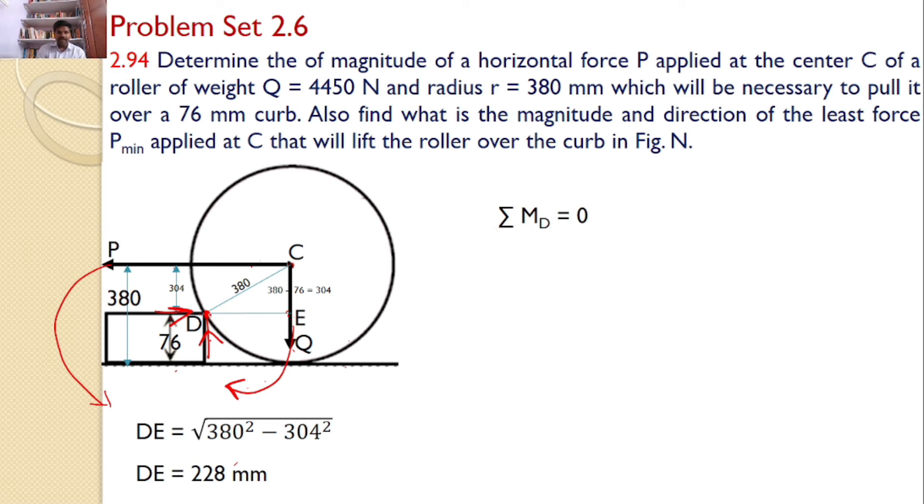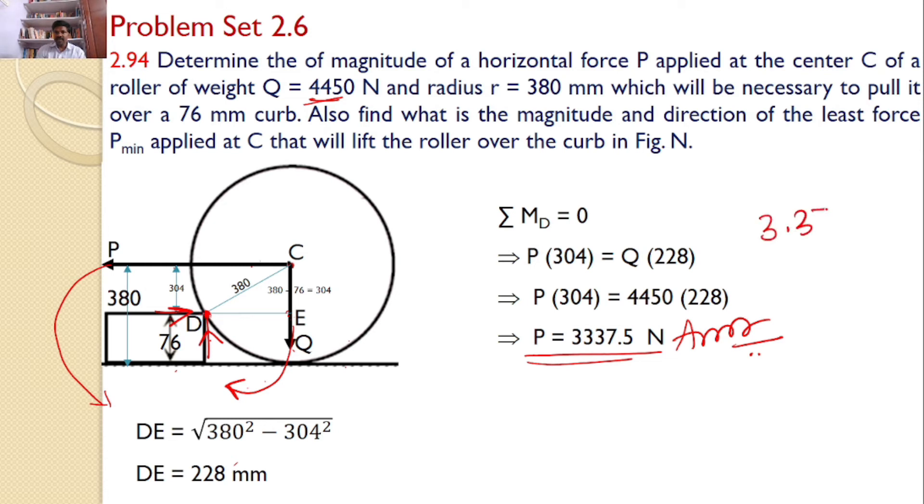Sigma MD, take moments about D equals to 0. P into 304 is equal to Q into 228. And Q value, weight of the roller is given as 4450. Upon substituting, I will get P is equal to 3337.5 Newtons. This is the answer. If the force is horizontal, now I required 3.33 kilonewtons force to make the roller roll over the curb.